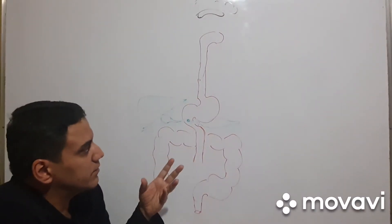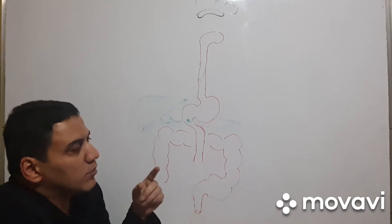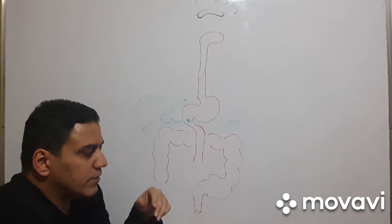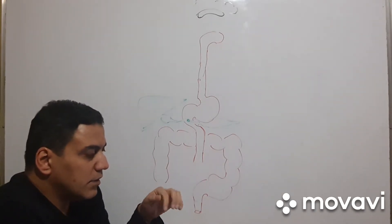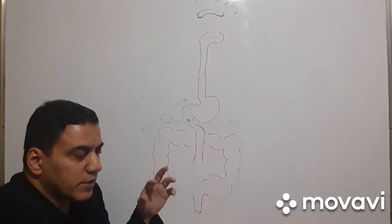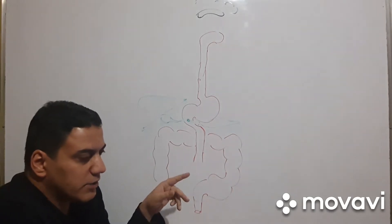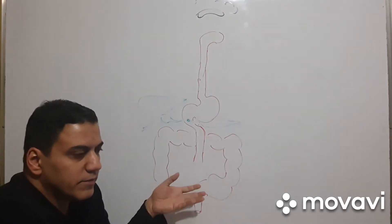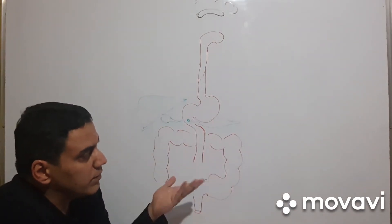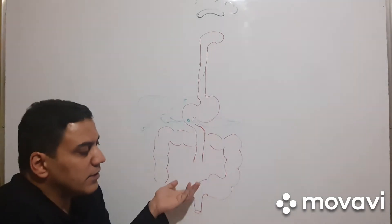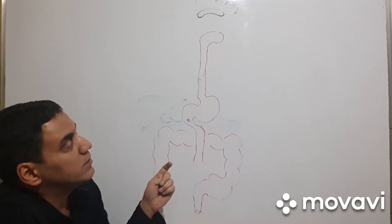Our topic is the digestive system. The digestive system starts from the brain, because in the brain — mainly in the hypothalamus — we have two nuclei: the feel-full nucleus and the hunger nucleus. They have opposite actions: one for feeling hungry to eat, and one for feeling full. These are the ventrolateral and ventromedial nuclei.